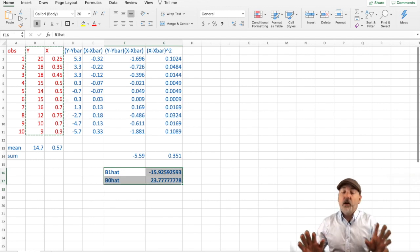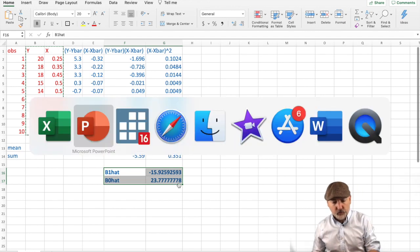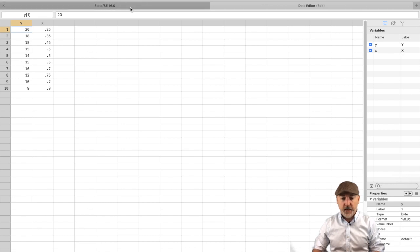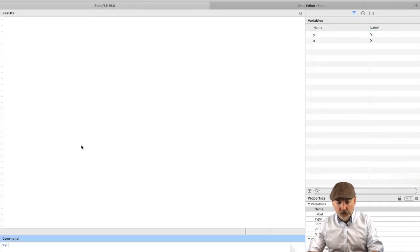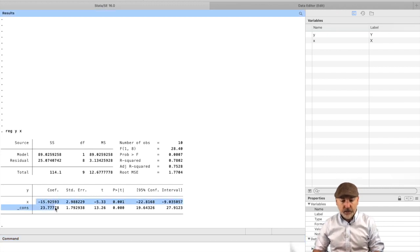We dropped that raw data into Stata, so here's the same x and y, and we ran a simple regression, y as a function of x, and we get those same coefficients here, the coefficient on x, that slope coefficient negative 15, and the constant or the intercept, that 23.77.